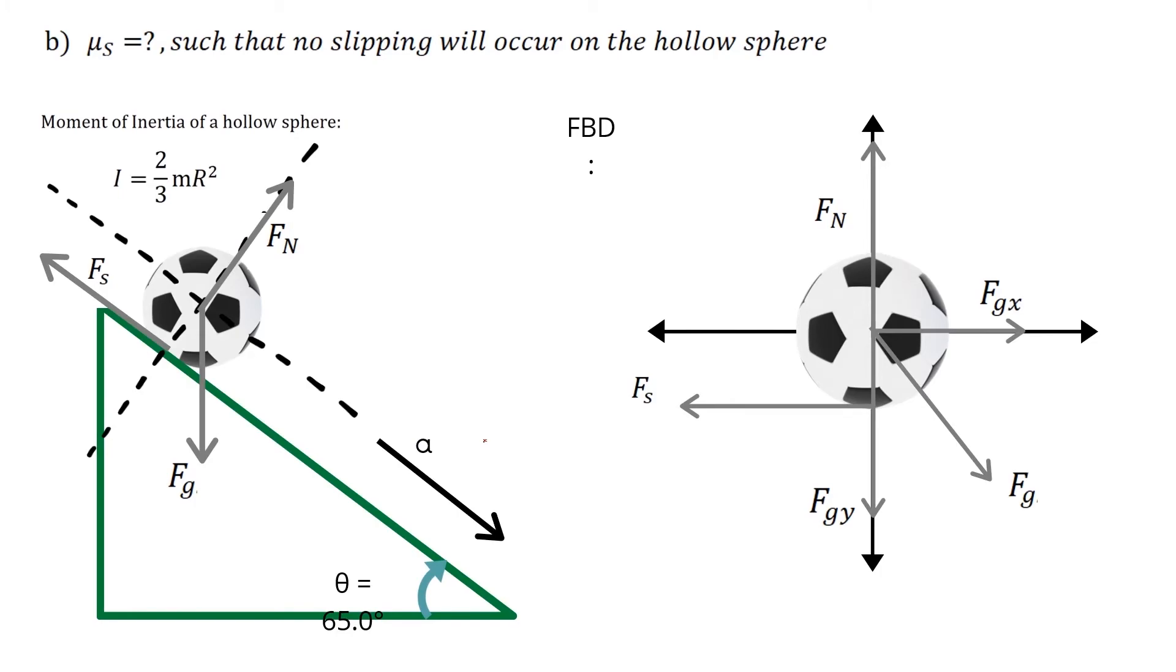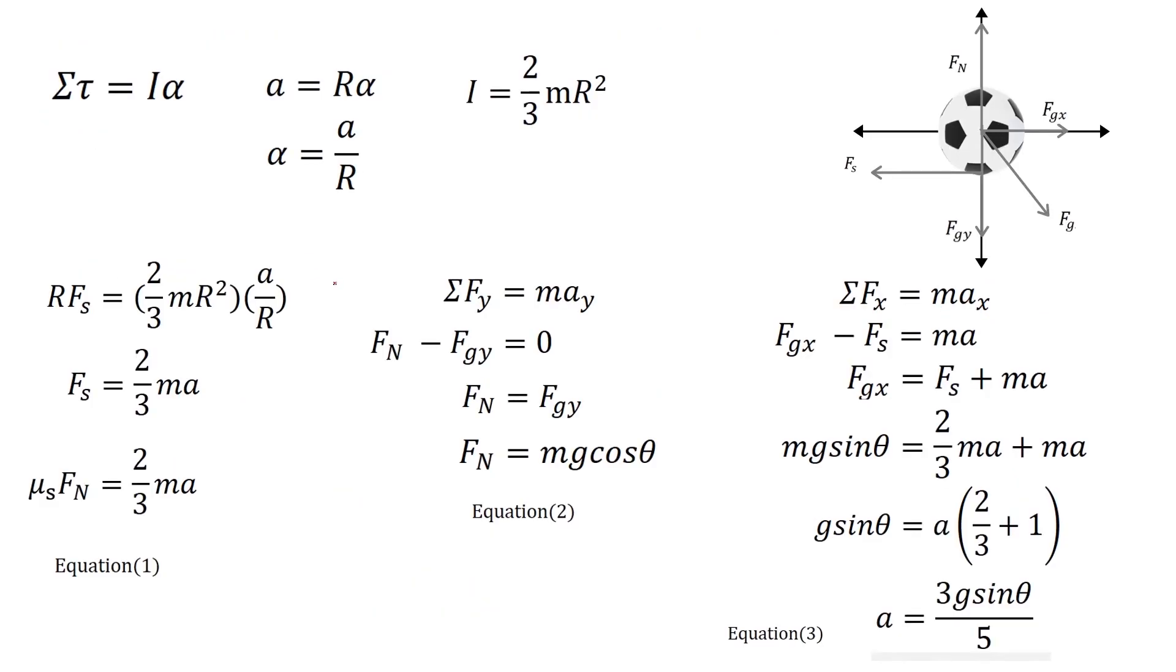For part b, it is essentially the same except the moment of inertia changes. The process is the same where this cancels out and we arrive at equation one. Equation two remains the same.